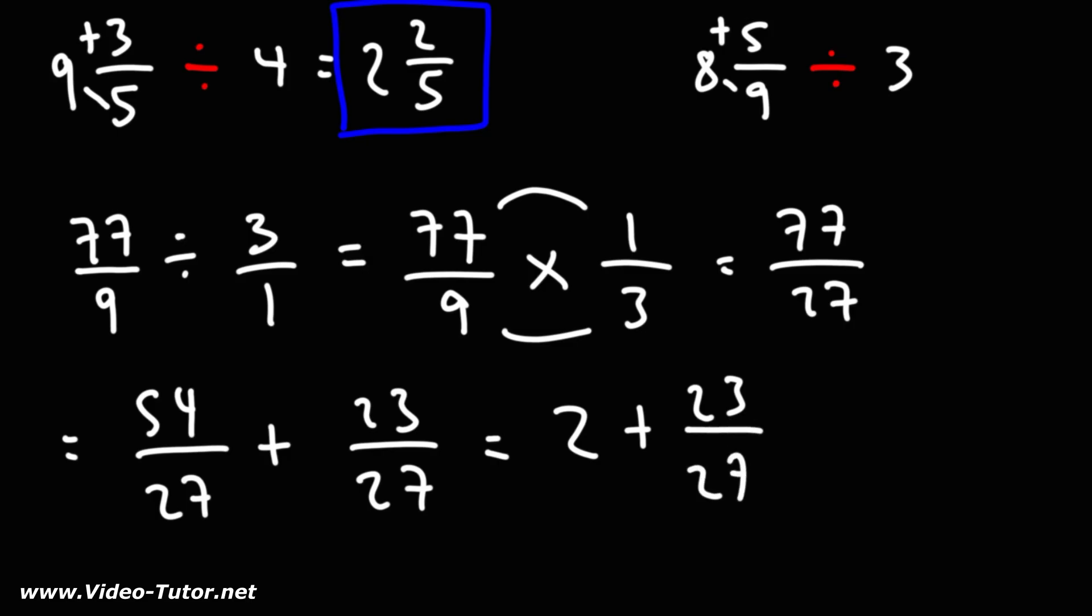Now 54 divided by 27 is 2. So we have a whole number and a regular fraction. So we could write our final answer as a mixed number, 2 and 23 over 27.